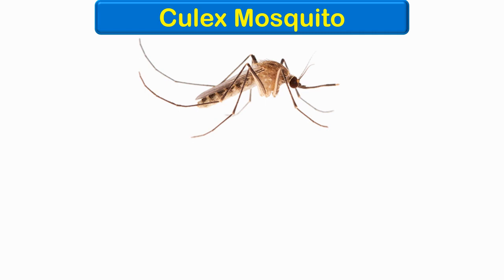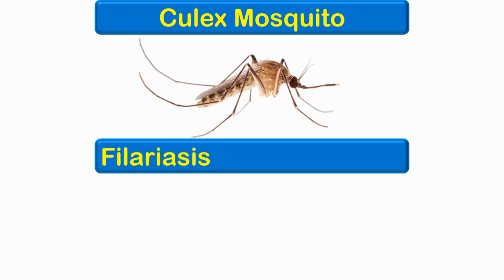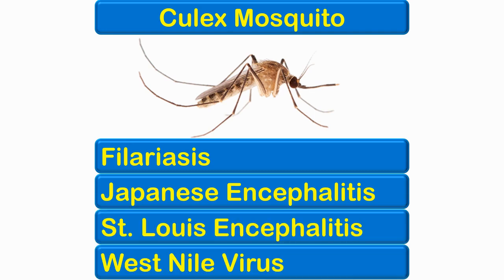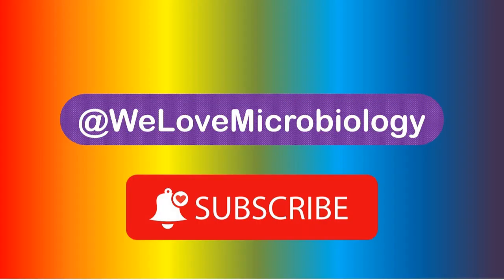Another important genus of mosquito is Culex. The Culex mosquito is the most widely distributed mosquito in the whole world. It is a vector for filariasis, Japanese encephalitis, Saint Louis encephalitis, and West Nile virus. Unlike Anopheles and Aedes, Culex mosquitoes lay eggs in stagnant polluted water, which is found easily near human dwellings. Rapid urbanization has given good opportunities to these mosquitoes to establish themselves around human habitats, making them the most common mosquitoes found in urban settings.